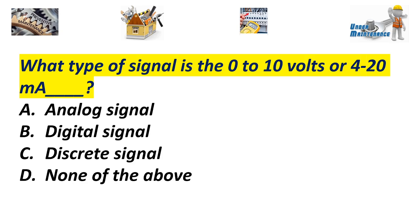Question number one. What type of signal is the 0 to 10 volts or 4 to 20 milliampers? A. Analog signal. B. Digital signal. C. Discrete signal. D. None of the above. Answer A. Analog signal.